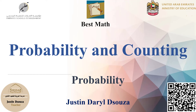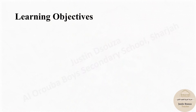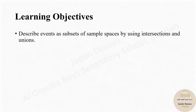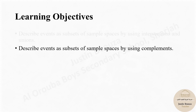Probability and Counting by Justin D'Souza. The learning objectives of this lesson are to describe events as subsets of sample spaces by using intersection and unions, and to describe events as subsets of sample spaces by using complements.